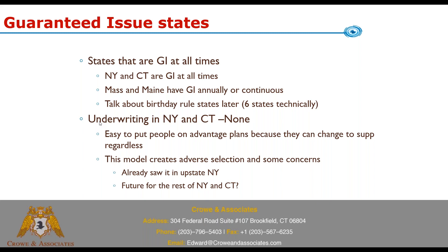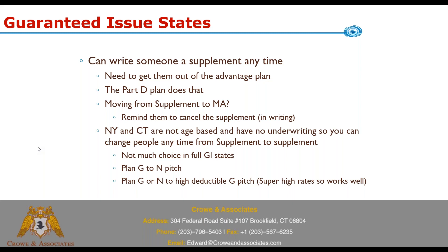The problem with this model is it creates adverse selection. People sit on an Advantage plan while they're healthy, then get sick and go on a supplement, which creates bad loss ratios for the carriers. We saw this in upstate New York where the two main Medicare supplement companies went non-commission because they were running so poorly. That makes us worry about the rest of New York, Connecticut, Mass, and Maine — just people going on supplements when they're sick, and carriers potentially cascading to non-commissionable status.